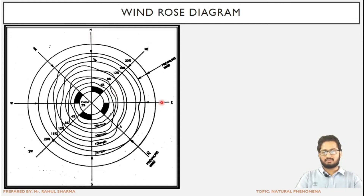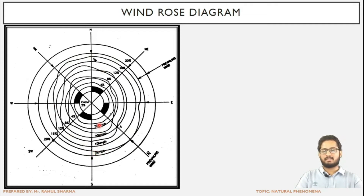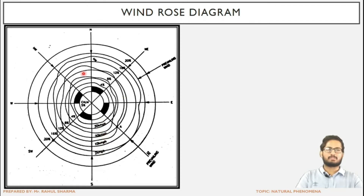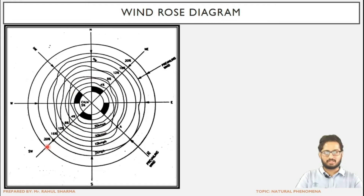All three parameters have been represented in the wind rose diagram. First is direction — the radial lines represent the direction. Next are the concentric circles and the irregular lines. The irregular lines represent the intensity or speed of the wind — values such as 2 km/h, 10, 20, 30 — and the irregular lines are representing the intensity or speed of the wind.